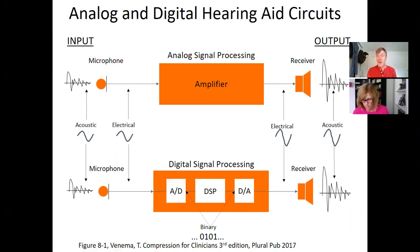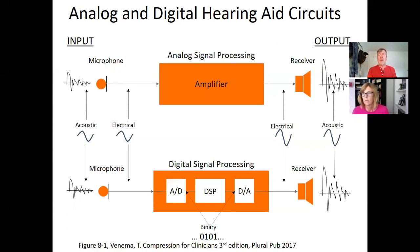ANSI measurements were so highlighted in the old days because they test the hardware of a hearing aid — harmonic distortion, equivalent input noise, reference test gain, output sound pressure level with 90 dB coming in. Now looking at the digital side: there's nothing digital about the mic. A mic is still analog — it changes sound into electricity.